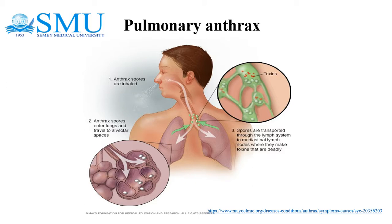Inhalational anthrax is usually fatal even with aggressive antimicrobial therapy. Anthrax spores are about 1–2 micrometers in diameter, a size optimal for inhalation and deposition in the alveolar spaces. The lungs are the initial site of contact, but inhalation anthrax is not considered a true pneumonia; in most cases there is no infection in the lungs.